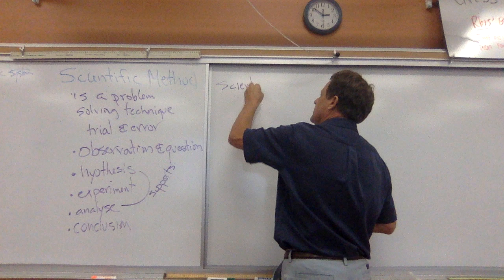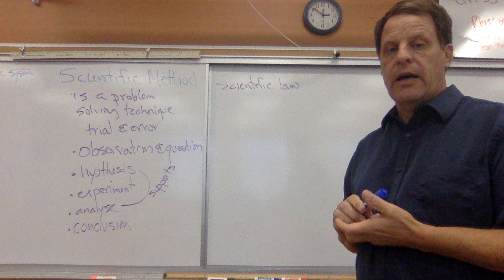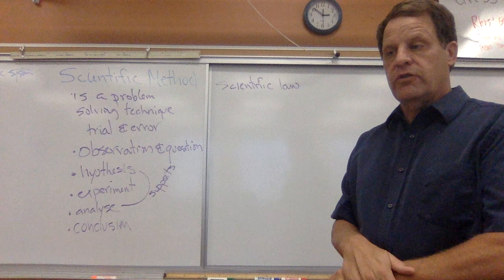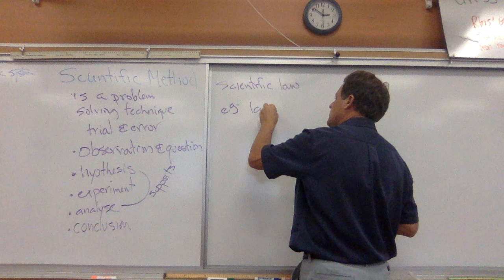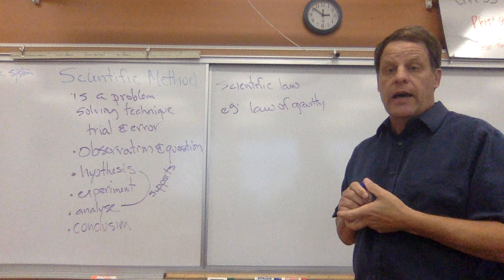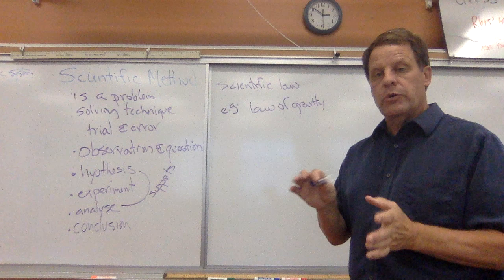A scientific law is basically just an observation of what is happening in science. From an elementary sort of example, if you drop something, it is going to go down — that's just kind of the law of gravity. So what we might say is 'what goes up must come down.' That's not necessarily true if we think about space and other planets, but when we throw or drop something, it comes down. That would be an example of a scientific law.